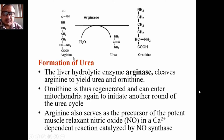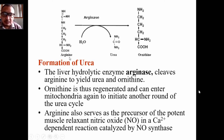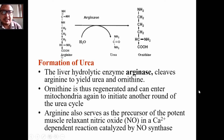Arginine is a non-essential amino acid in adults since it can be synthesized via the urea cycle, but in infants it is considered a non-essential amino acid as well — though the speaker notes it is essential for infants due to their limited synthetic capacity.